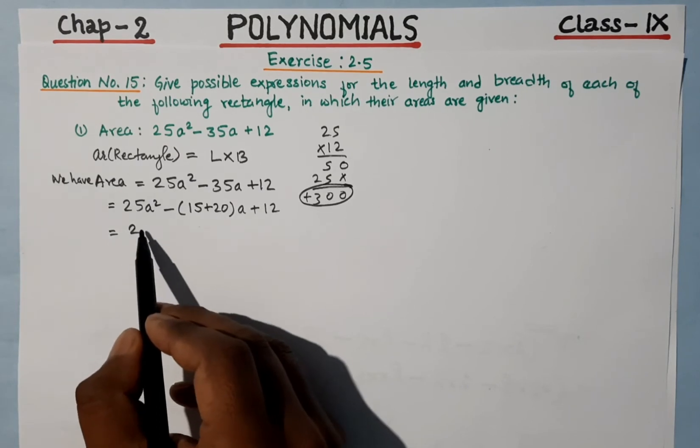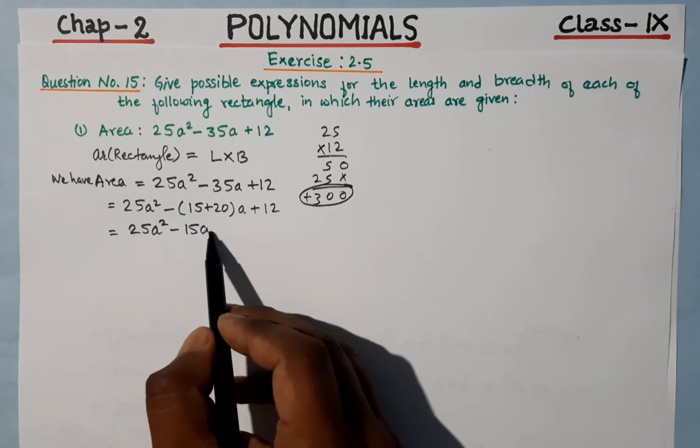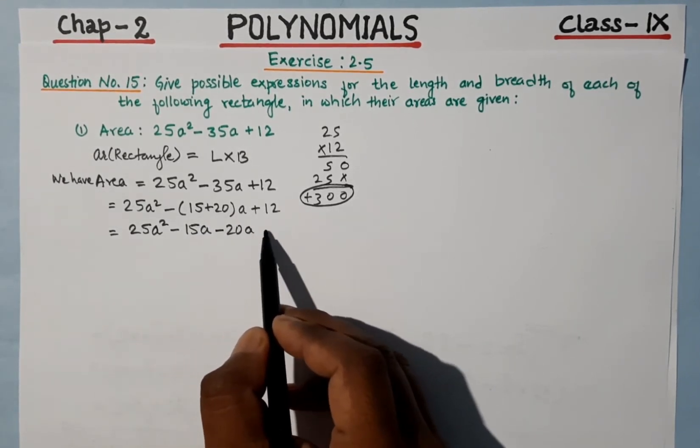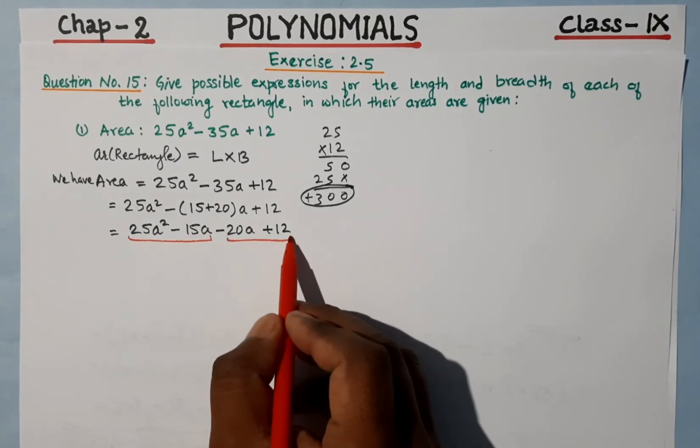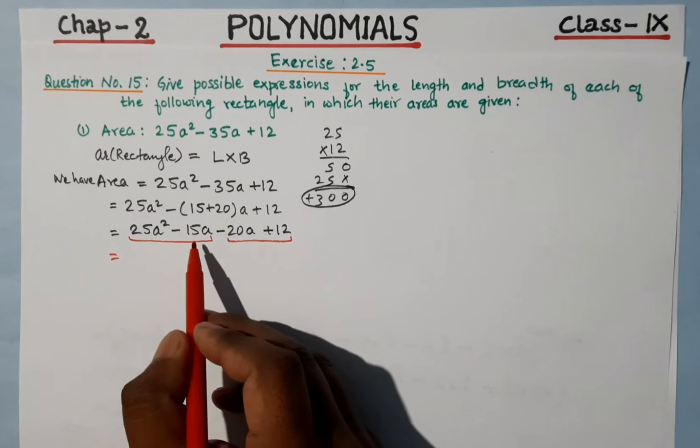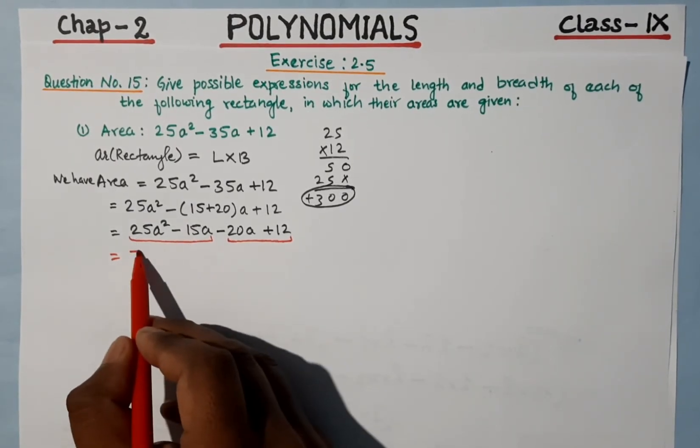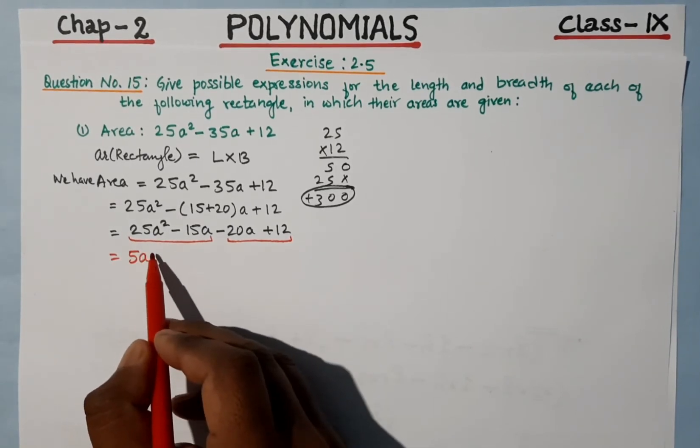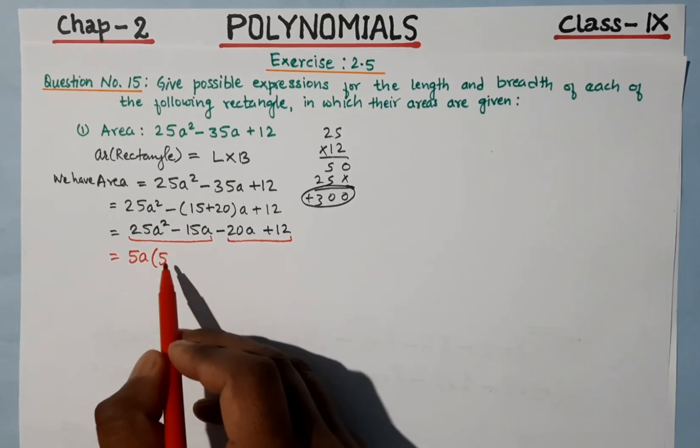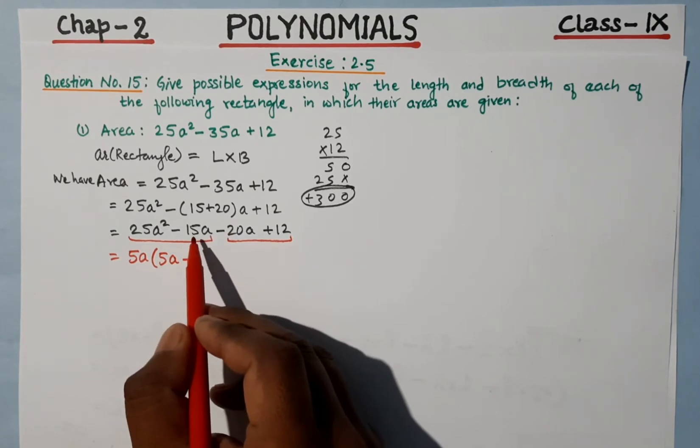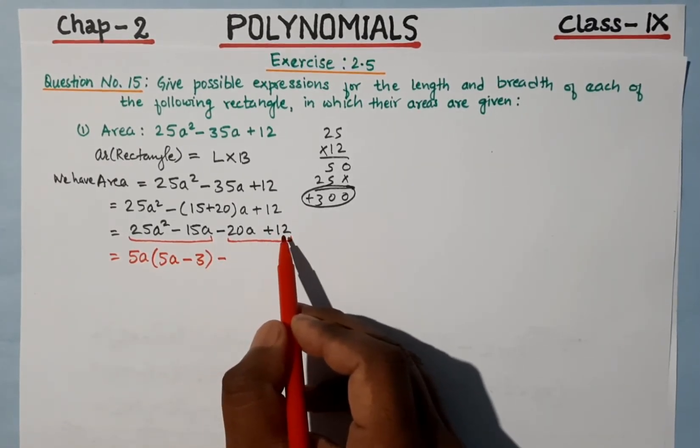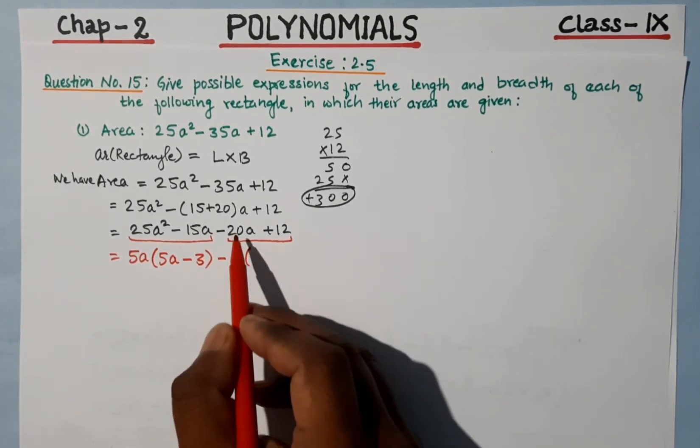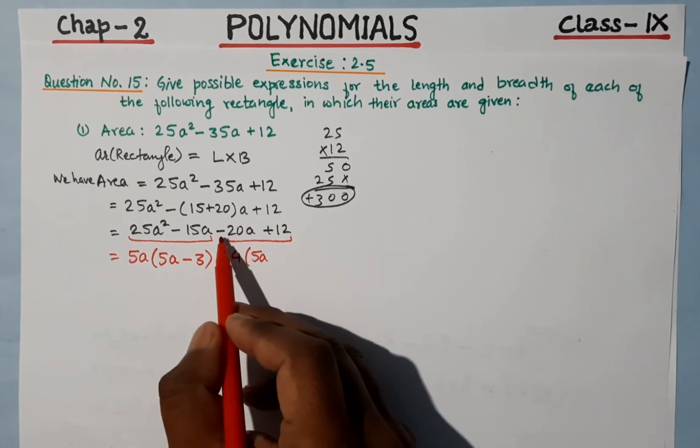Now we open the bracket: 25a² - 15a - 20a + 12. Now we take out the common factors. From 25a² and 15a, we can take 5a common, giving us 5a(5a - 3).